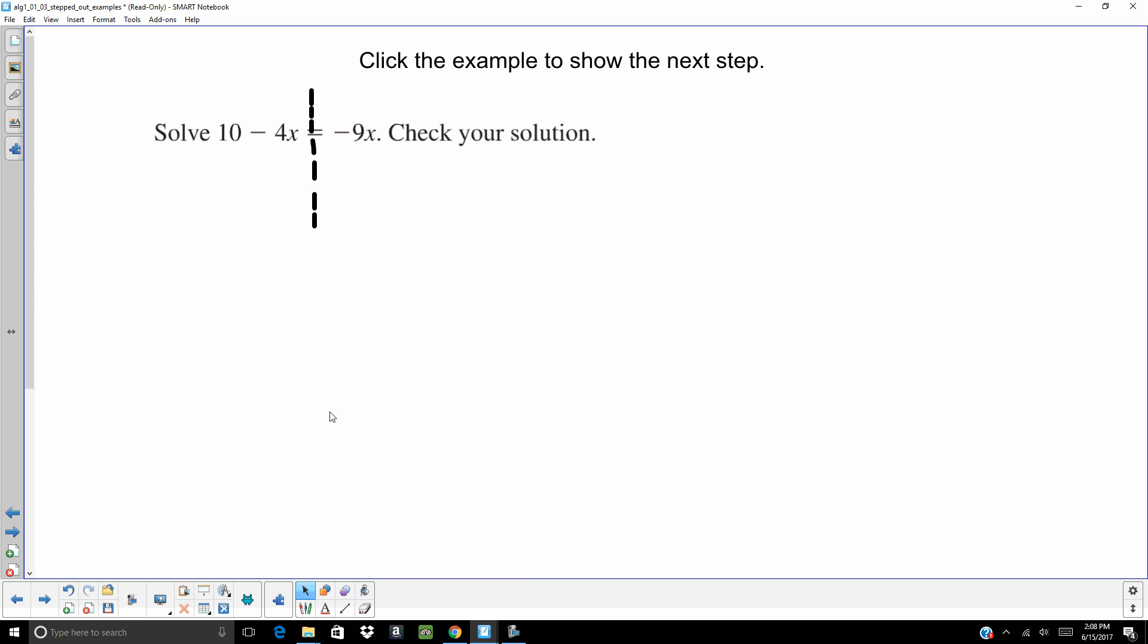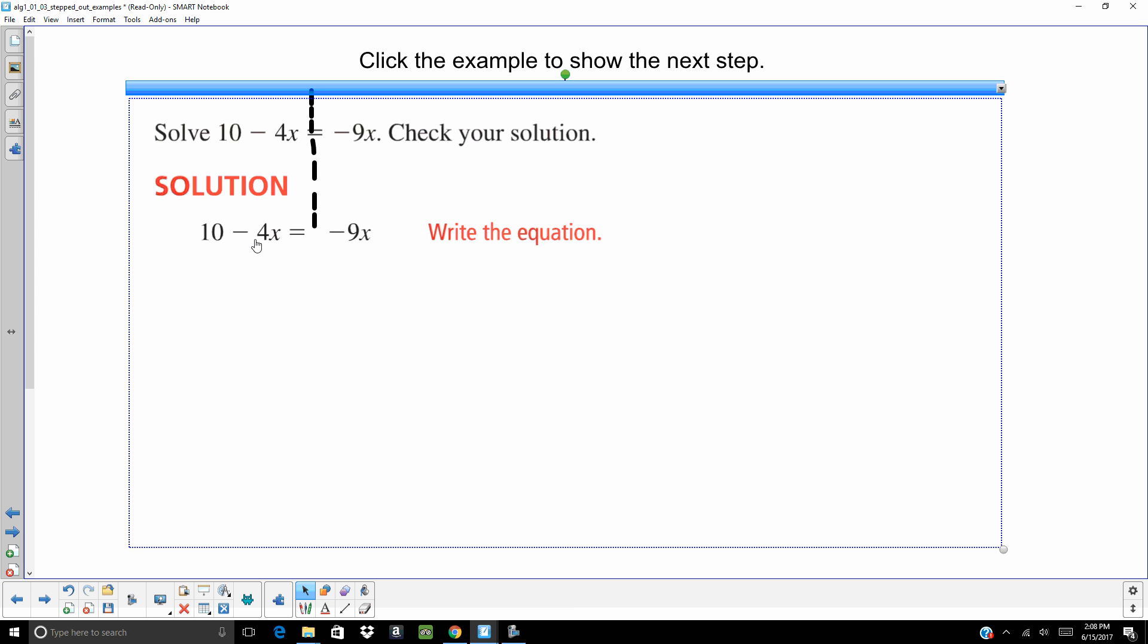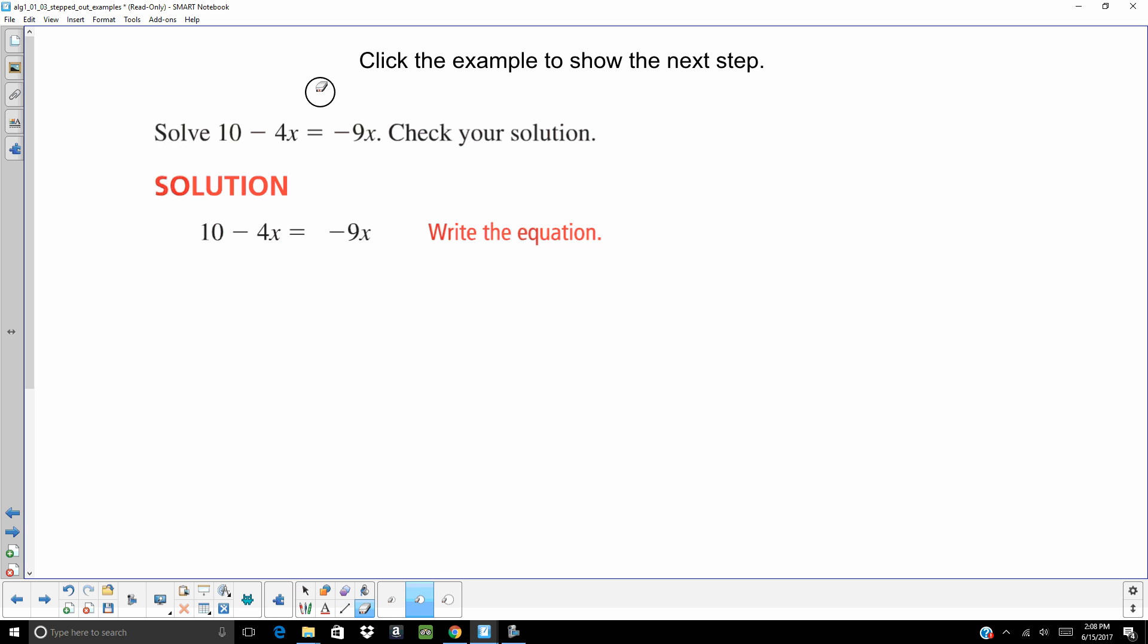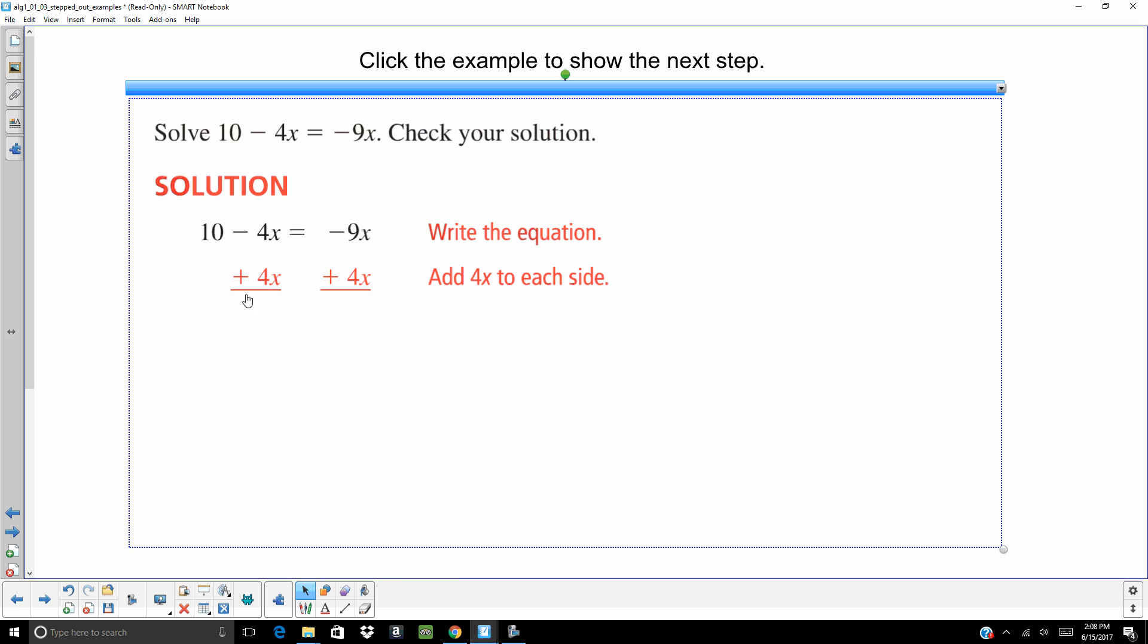So what I'm going to have to do is I'm going to add 4x to both sides. That's a minus 4x, and the opposite of minus 4 is plus 4. So add 4x to both sides. I'm going to get 10 equals negative 5x. And if you notice, now our variables are on one side, our constants or our numbers are on the other side. So I'm going to divide by negative 5, and I get negative 2 equals x. So our solution is x equals negative 2.